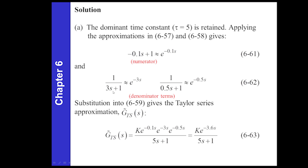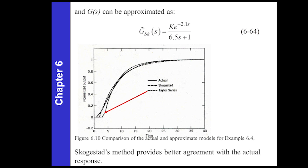For the numerator term, the equation says we should add e to the negative 0.1s as a time delay — so 0.1 units of time delay — to approximate this numerator term. Then we take the non-dominant time constants, keeping the one with the highest tau as the dominant time constant. The dominant time constant here is 5, and we don't make a time delay approximation for that one. The ones with smaller time constants get folded into the time delay: that's 3 units from one term and 0.5 units from another, plus the 0.1 from the numerator — giving 3.6 units of total time delay.